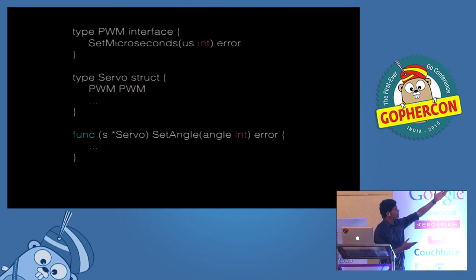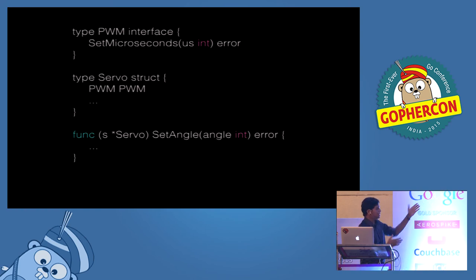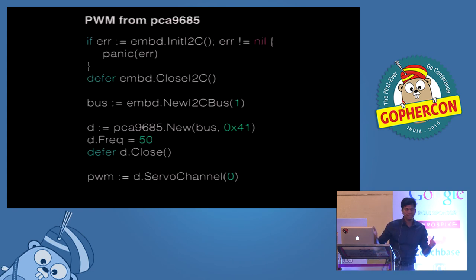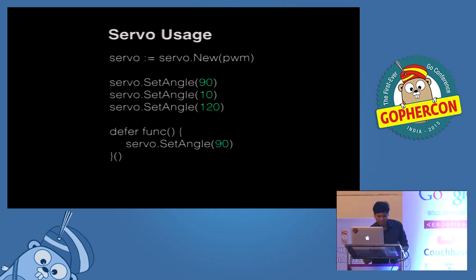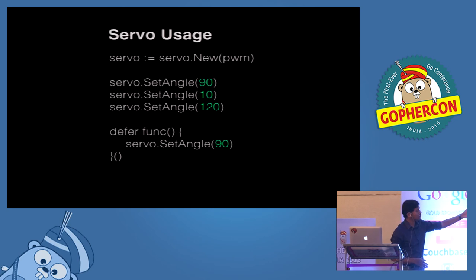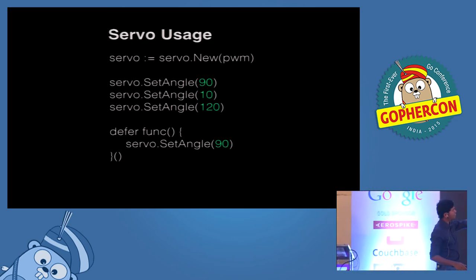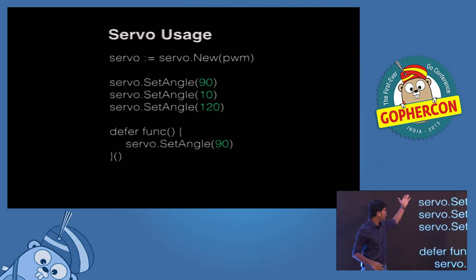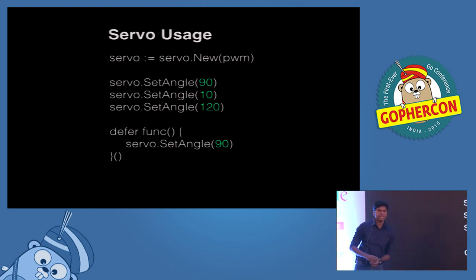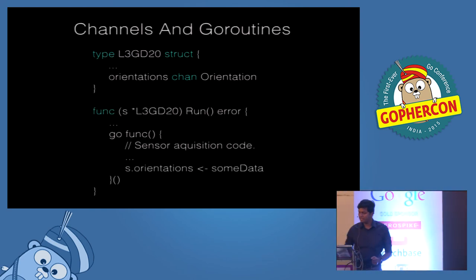If you look at the structure of PWM being a simple interface, it just matches what happens in the real world. That's how interfaces were used. And this is how the final code would look: once you have the PWM, you supply it to the new method which gives you the servo, and just use set angle. As simple as that.